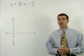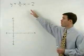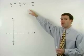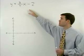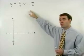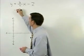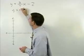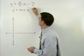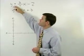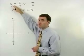So let's graph the line that has the equation y equals 3 fourths x minus 2. We know that this line is in slope intercept or y equals mx plus b form because y is by itself on one side of the equation.